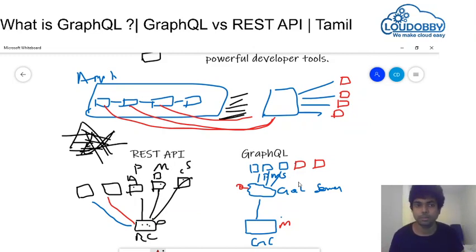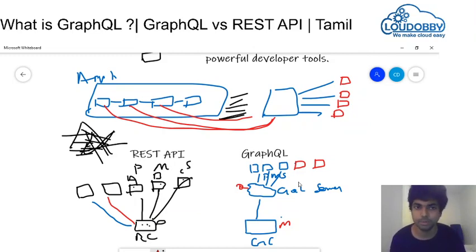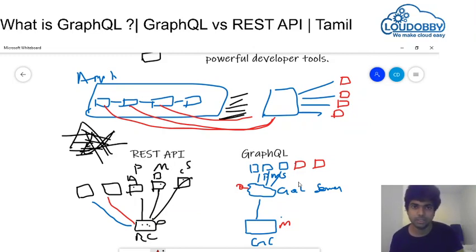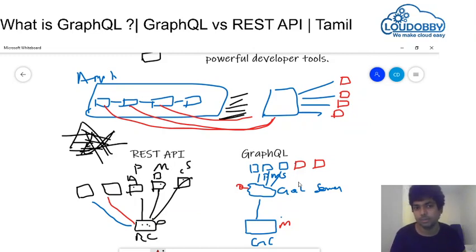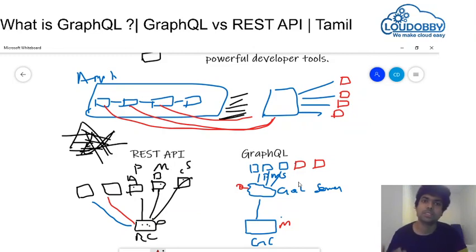Moving forward, this is very important because multiple applications will create microservices, and more infrastructure means developers are adapting to developing more in business contexts. That is why we are going to use GraphQL.